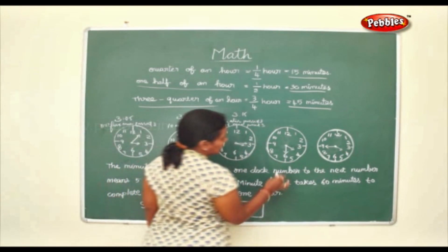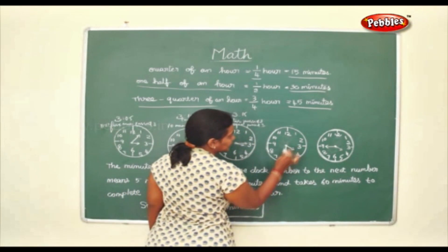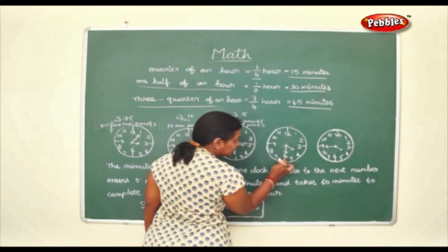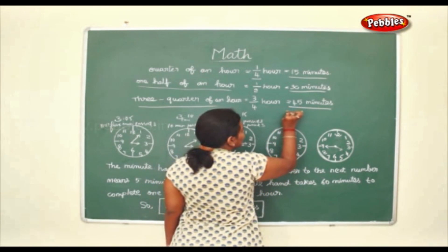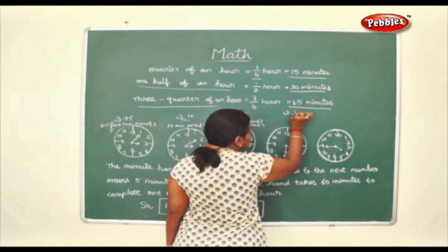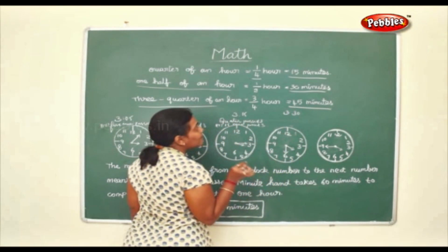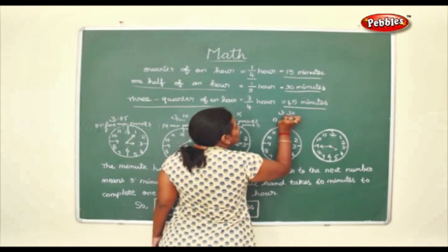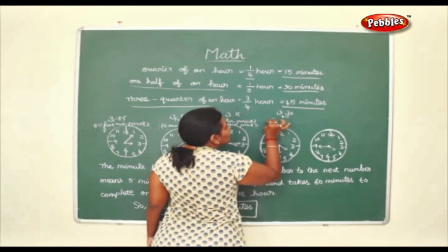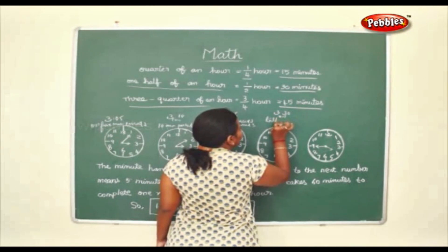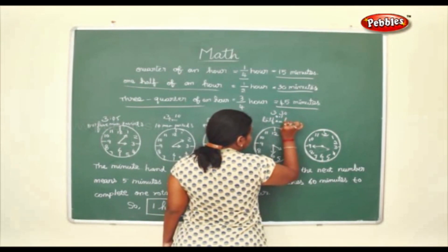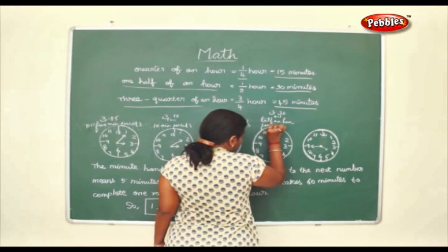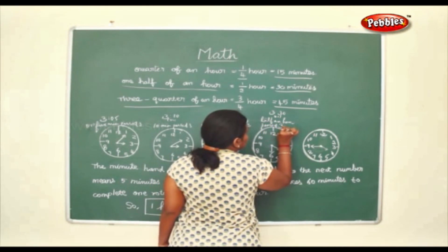You can write this as 3:30, or half an hour past three.